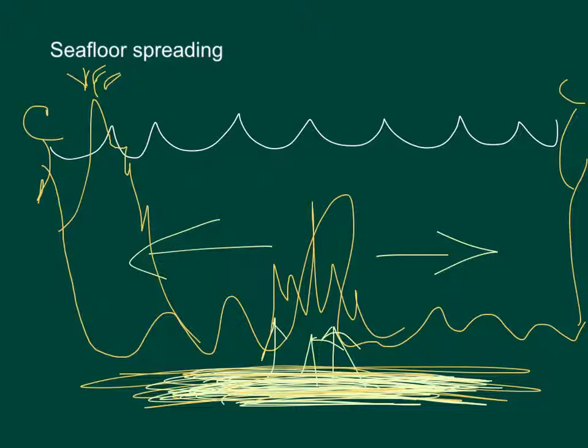Okay. So seafloor spreading, again, is evidence of continental drift. Because what they're seeing is the seafloor is slowly pulling apart. Okay. And if the seafloor is pulling apart, then that means the continents on either side of them are pulling apart from each other.